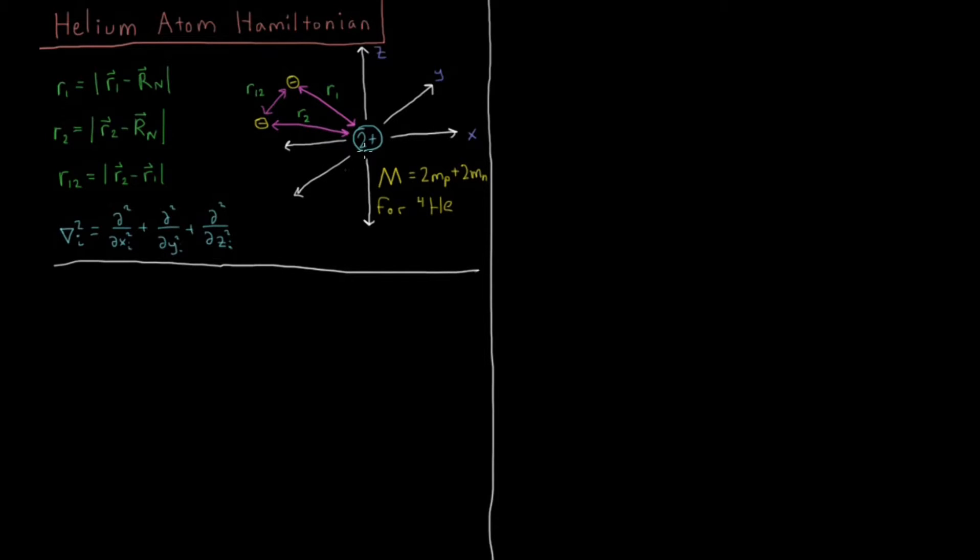So we've got our model system here. It's a nucleus with two protons in it, so it's got a charge of plus 2e, and it's got a mass of four atomic units. If we're talking about helium-4, the mass of two protons and two neutrons are approximately equal, both about 1800 times or so larger than the mass of a single electron.